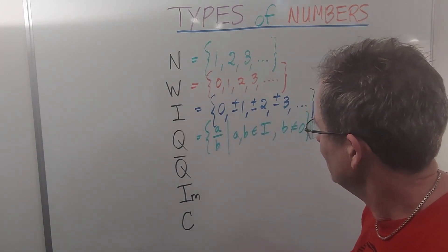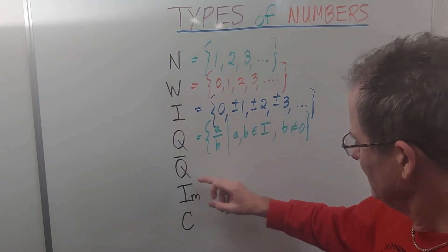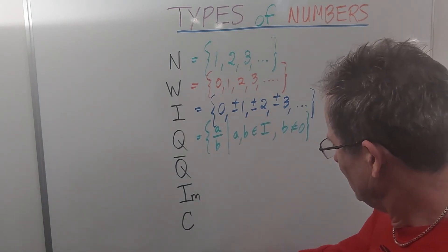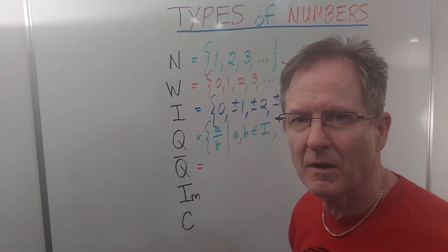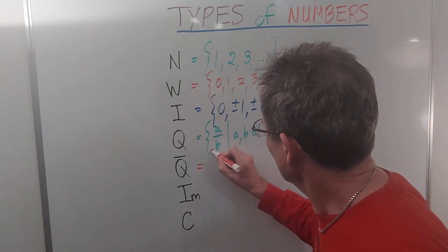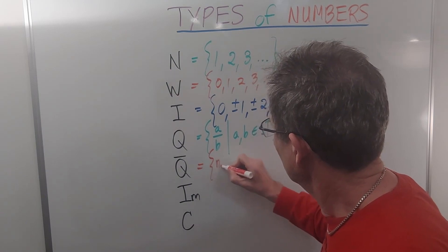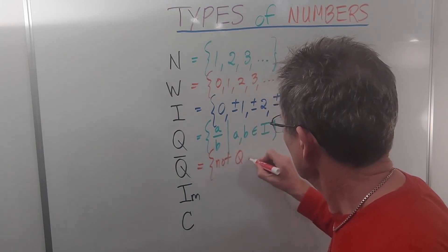And then there's the irrational numbers, which are represented by the Q with the bar on top, the bar meaning not. That's the set of numbers that are not rational.